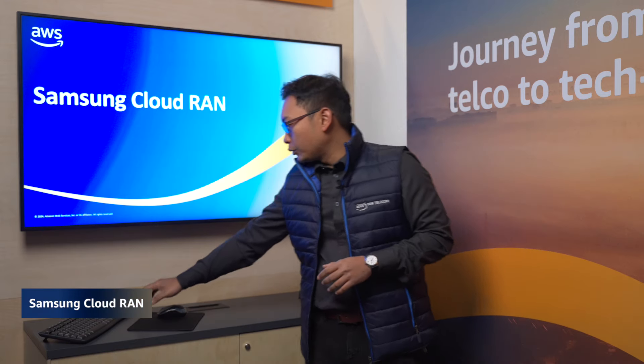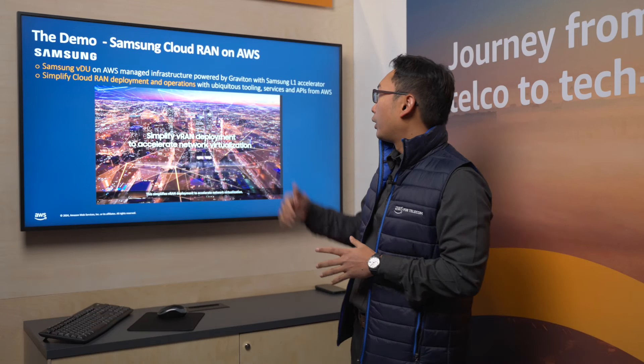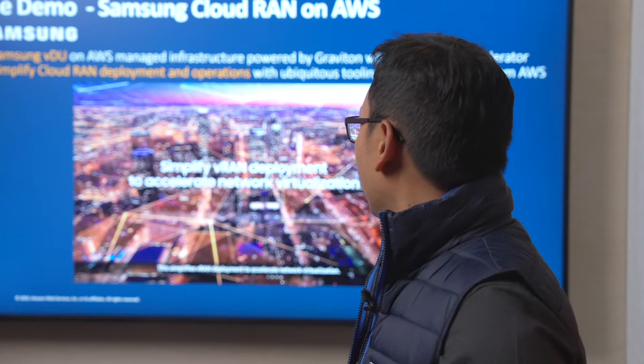I'm going to start by showing what we are doing with Samsung. AWS has been working very closely with Samsung to reduce the friction for telco customers to run Cloud RAN on the cloud. AWS has been working with Samsung to integrate the vDU, which is a component close to the radio tower to process L1 and L2. Samsung has successfully integrated their vDU on a Graviton EC2 instance using an L1 card from Samsung.